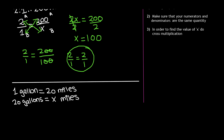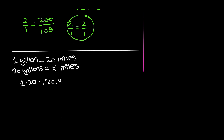First we write this as a ratio: for 1 gallon we travel 20 miles, so it's 1 to 20, then the proportion symbol, then 20 to X. Now we write this in fraction form: 1 over 20 equals 20 over X, because the proportion sign is really equal to, since a proportion compares two ratios that are the same or equal.